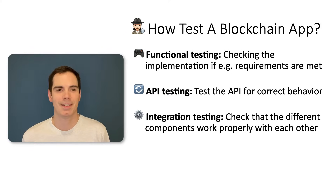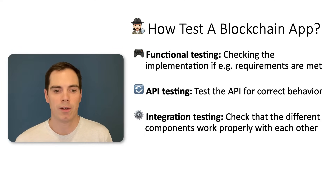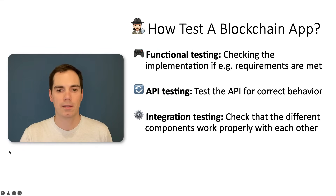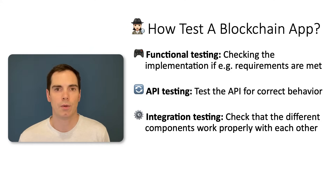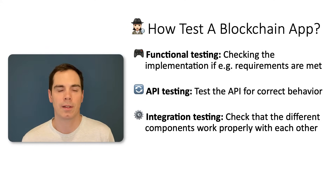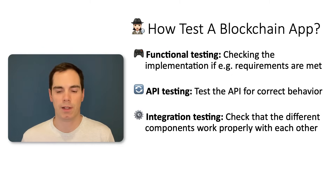With integration testing, you check that the different components — as we know from traditional software testing — work properly with each other. This is nothing special here; it's just the tech stack that changes a bit. You may have unit tests and integration tests running in an automated way, but you can also do manual integration testing if you have different systems or components to integrate.